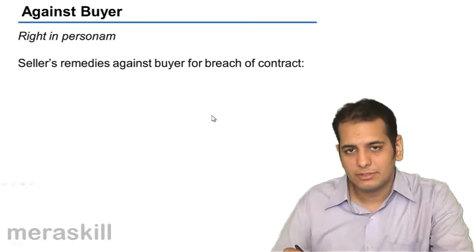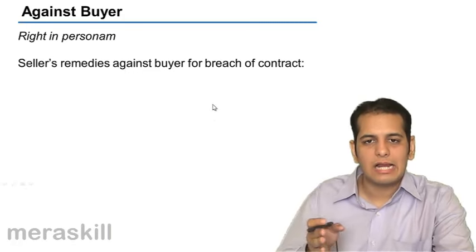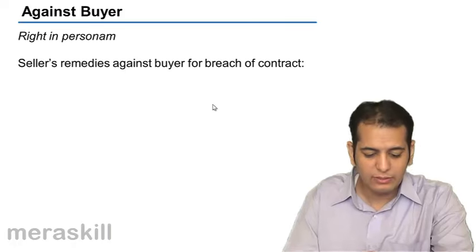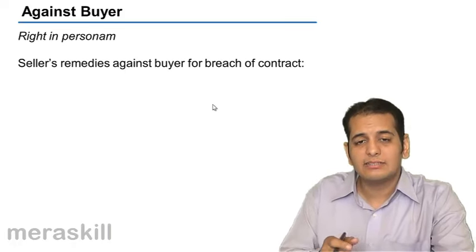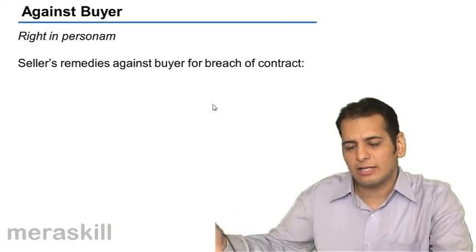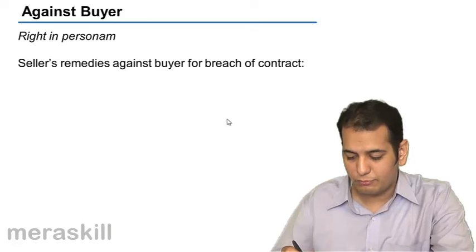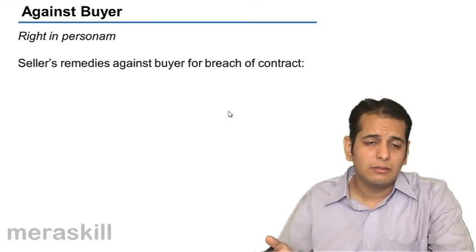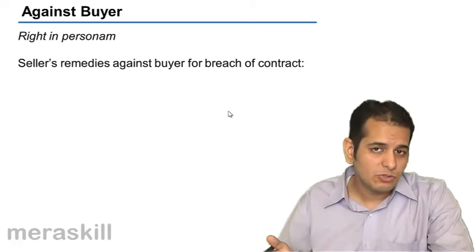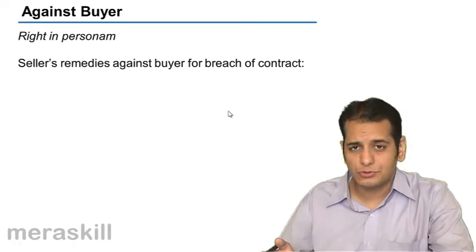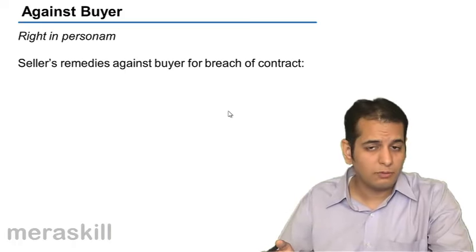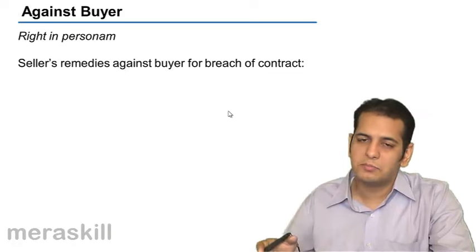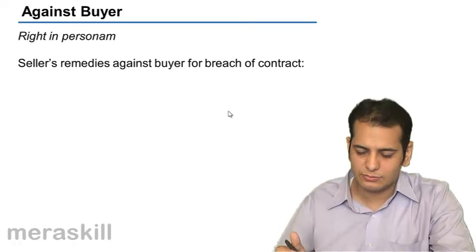These are the rights of seller against the buyer. Let's see what are the remedies that a seller has against the buyer for breach of contract. Breach of contract occurs because the buyer is not paying the price he had promised to pay. So if he is not performing his side of the contract, it will be considered as breach.